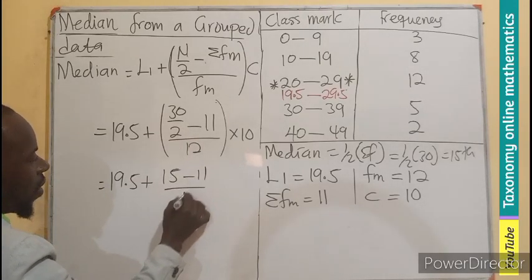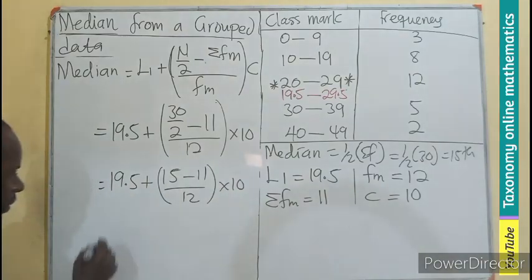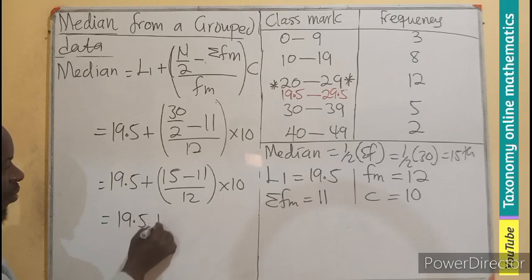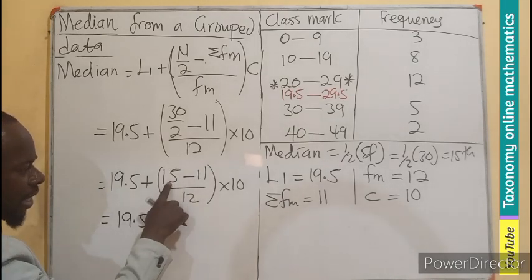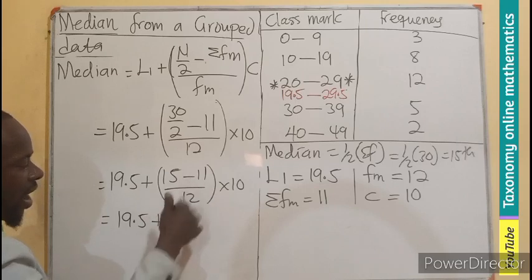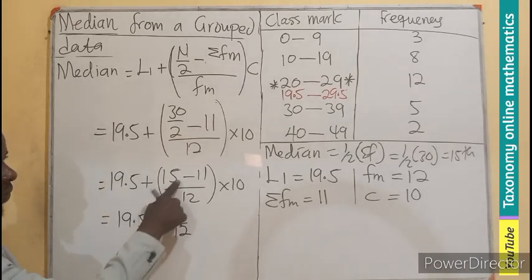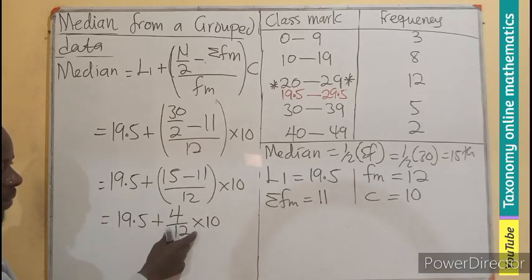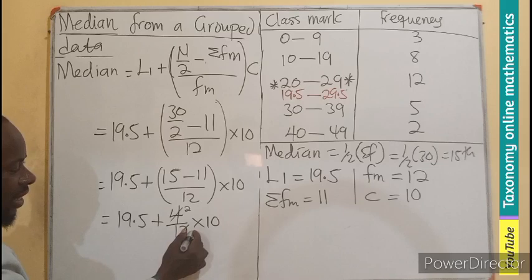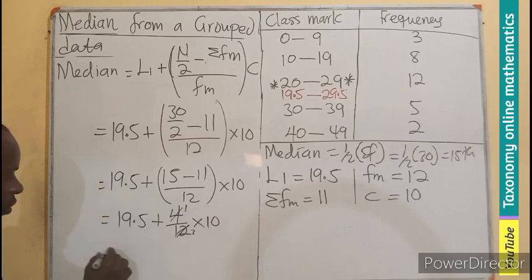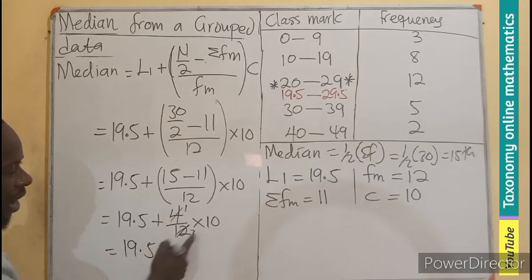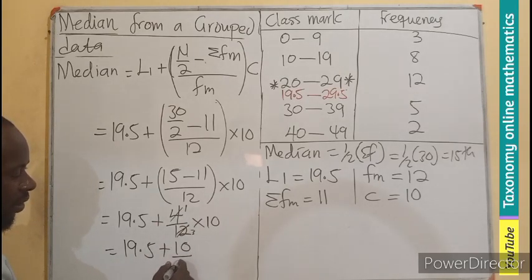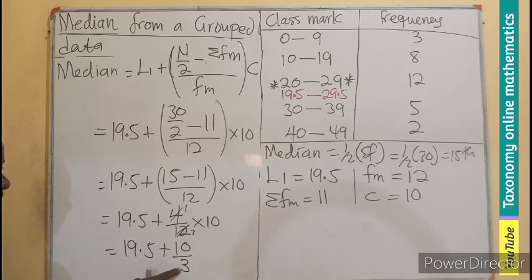So this 19.5 plus, this is going to be 15, minus 11, all over 12, times 10. So let's go step further, 19.5 plus, this here is going to be 4, divided by 12, times 10. I believe we can see 2 as a common factor, or even 4 can go here 1, and go here 3. So I'm left with 10 out of 3. So, 19.5 plus, 1 times 10, 10, divided by 3. So you only have to multiply 3 by this, plus this, divided by 3.